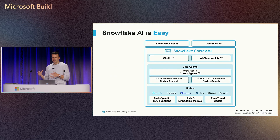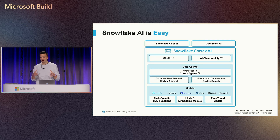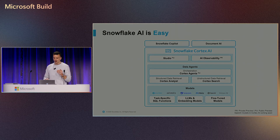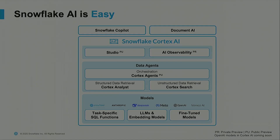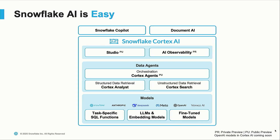The experience in Snowflake for doing Gen AI stuff with your data is best in market right now. We've done a really good job of building out these tools and they're really easy to use. It's all bounded by the Snowflake security RBAC control posture. On top of that, we have a studio experience, observability, a co-pilot experience inside of Snowflake, as well as Document AI for extracting information from scanned documents.